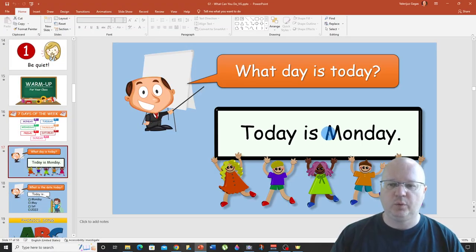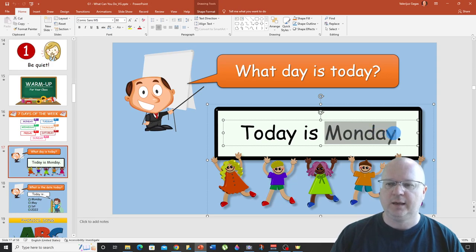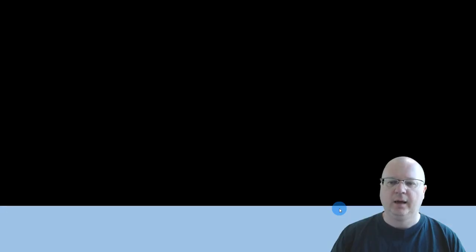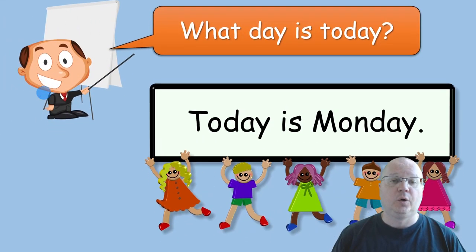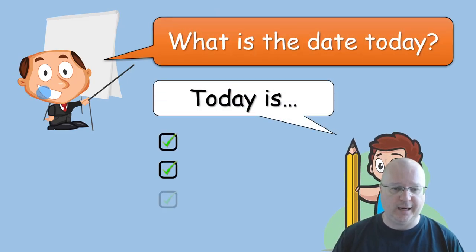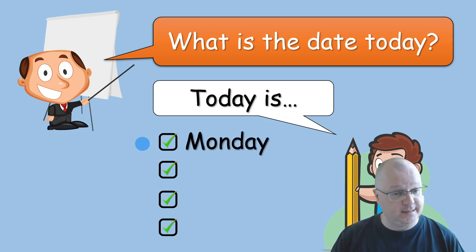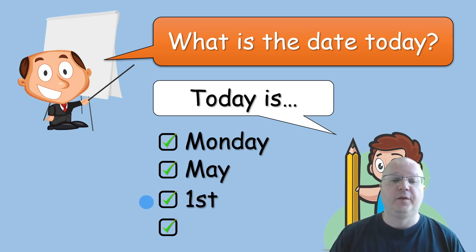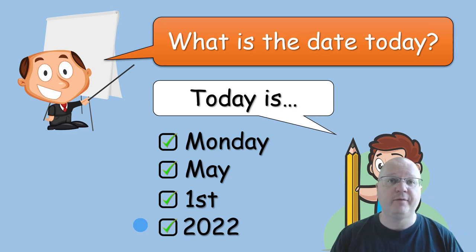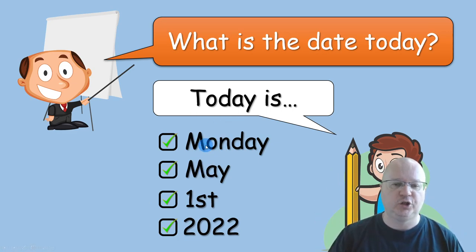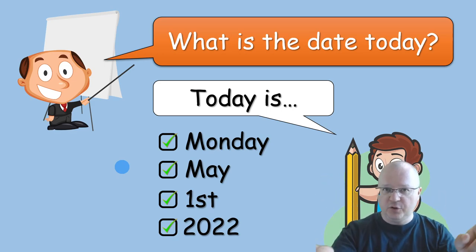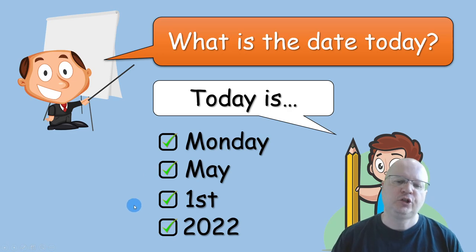It's very easy to change the day of the week — just click on the text box, highlight the word, and change it to any day you want. Next question: What is the date today? Your students need to answer in this order: today is, for example, Monday, May the 1st, 2022. If you're consistent and do it every single class they're going to remember. You can change the words here depending on what day it is.